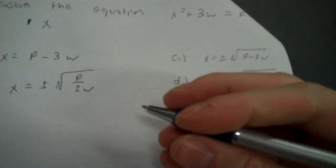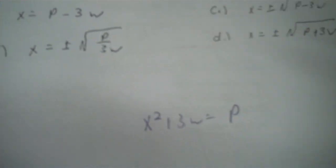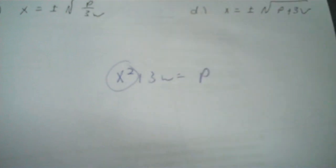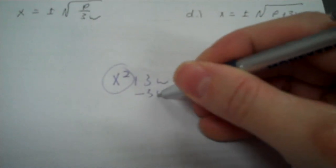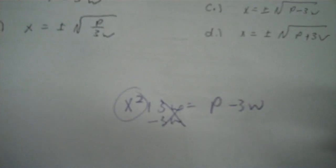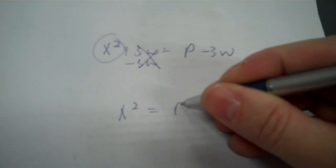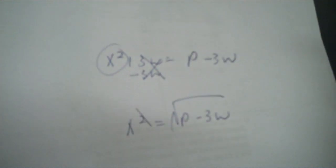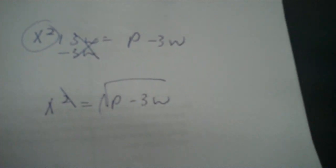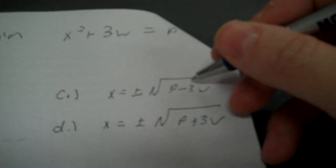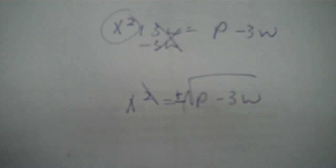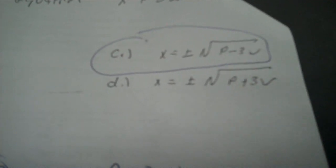Number seven: solve the equation X squared plus 3W equals P for X, and circle the right answer. Circle the X squared — it doesn't have a multiplier. Get that 3W out of there by subtracting 3W, putting it behind the P. So you have X squared equals P minus 3W. Then to get rid of a second power, you square root the other side, which gives X equals the square root of P minus 3W. That would be C. The plus-minus is there because when you square root, you put that in front.